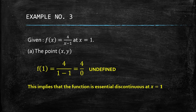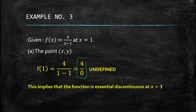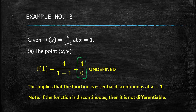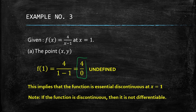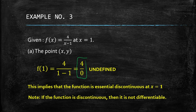Since the result is a nonzero number divided by zero, the function is automatically essentially discontinuous at x = 1. If the function is discontinuous, then it is not differentiable. This could be the end of the solution — there is no need to find the other answers because the function is already not differentiable.